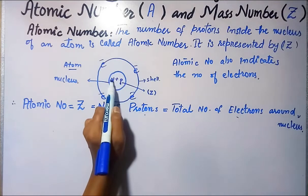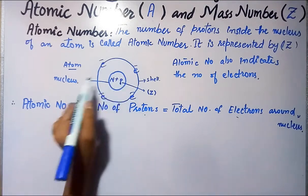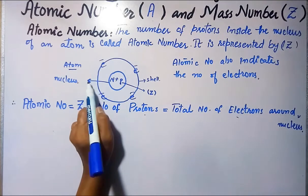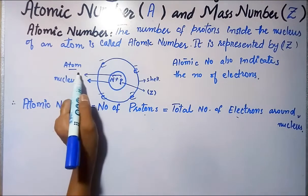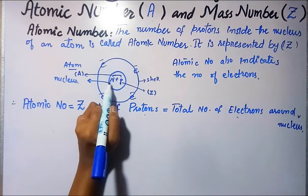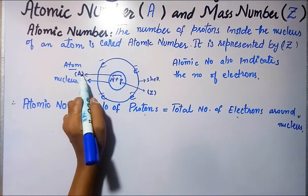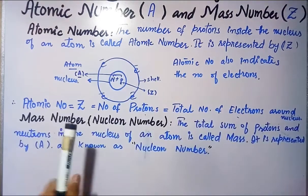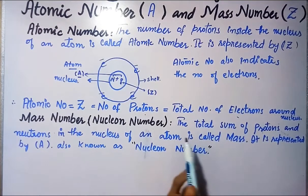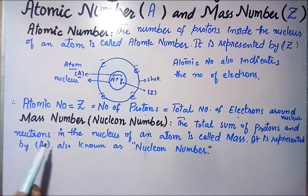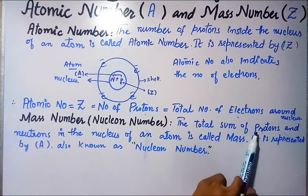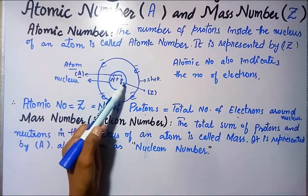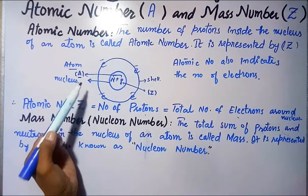If we talk about the whole nucleus — neutron plus proton — we get the mass number. The nucleus contains both neutrons and protons. Mass number is represented by A. Neutron plus proton is equal to atomic mass, which is A. Mass number is defined as the total sum of protons and neutrons in the nucleus of an atom.